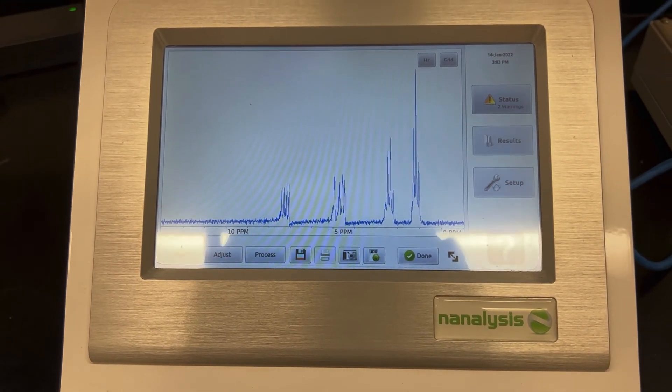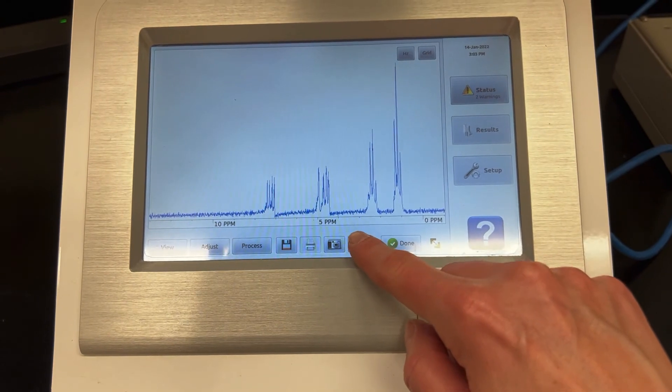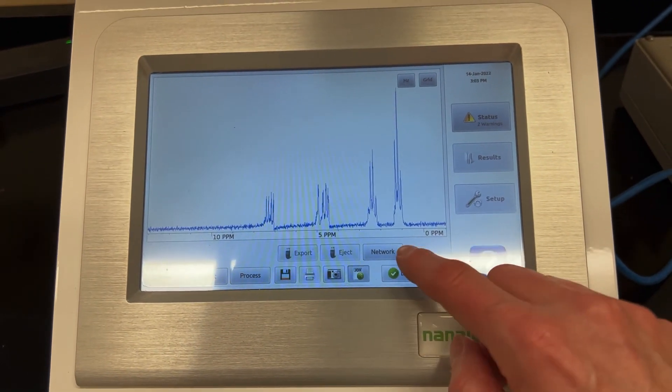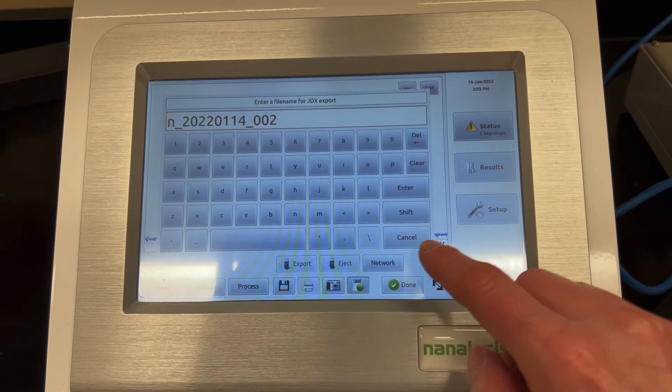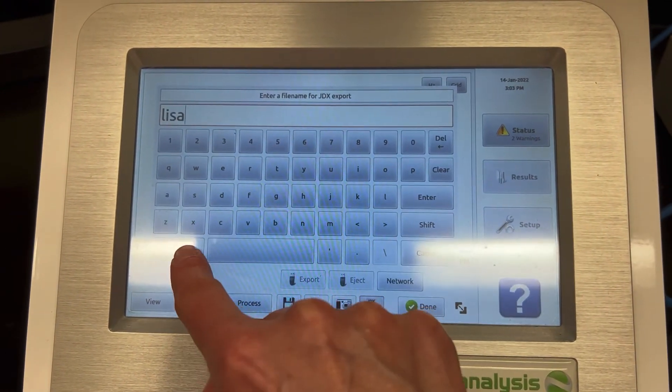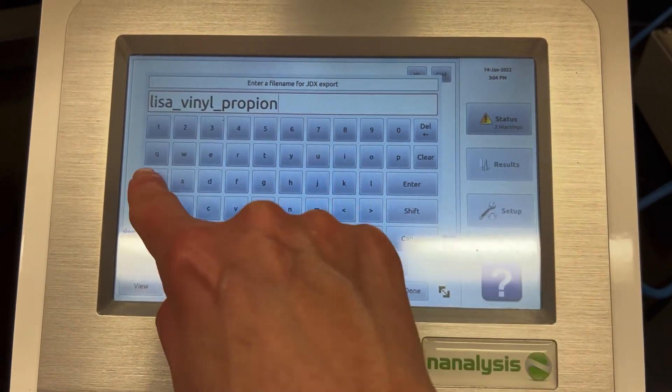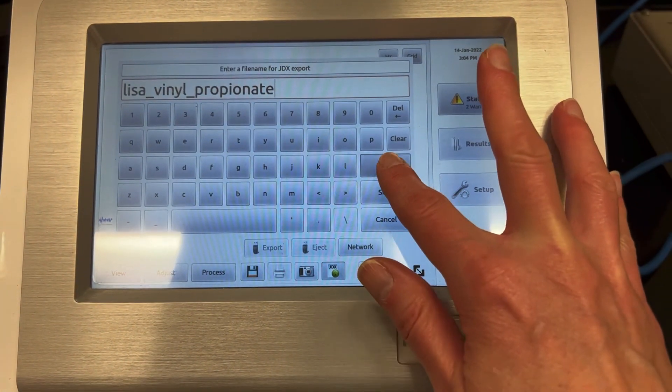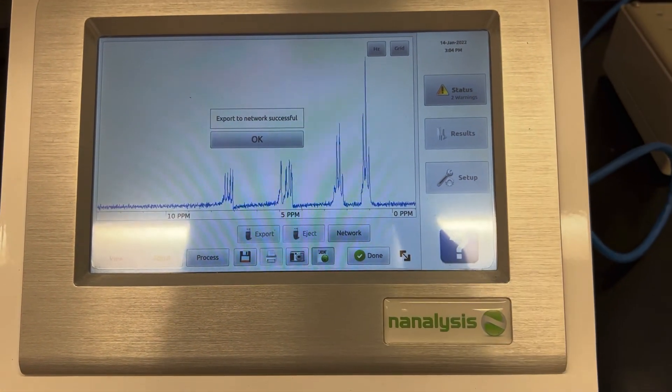The spectrum is now done. All you need to do is save it, so you're going to push the JDX button then the network button, and then you can just remove the auto-generated name, type in your own name and push enter, and then that is sending the file to the computers.